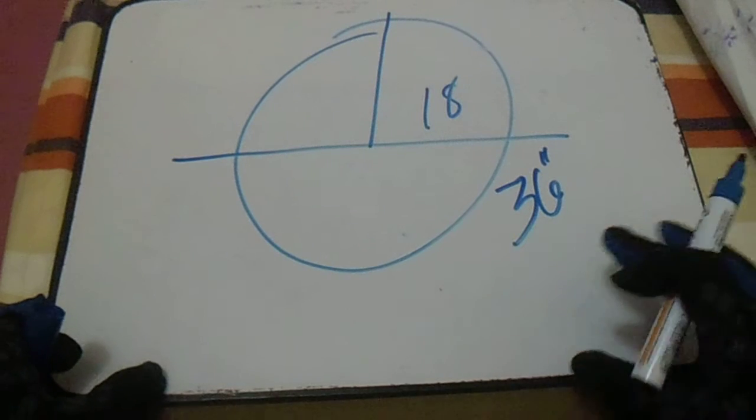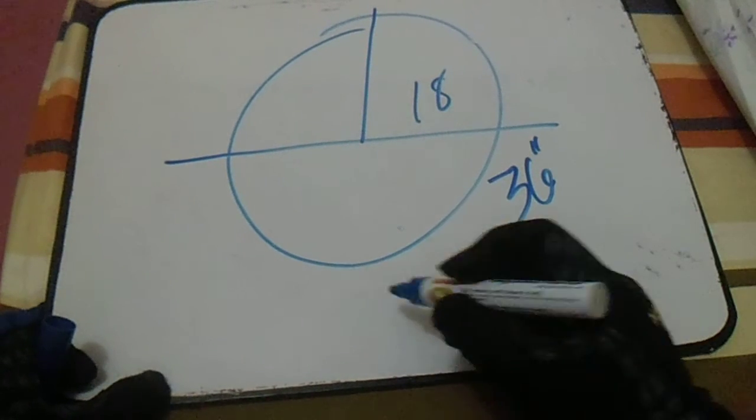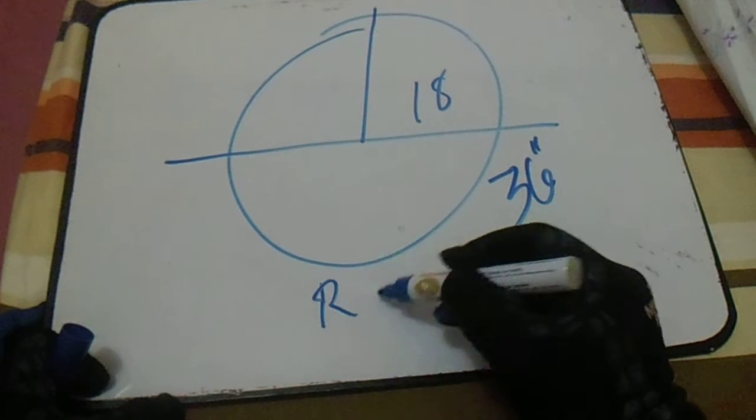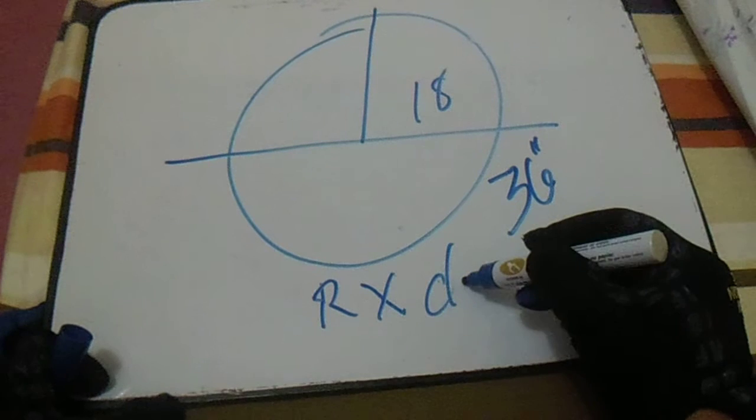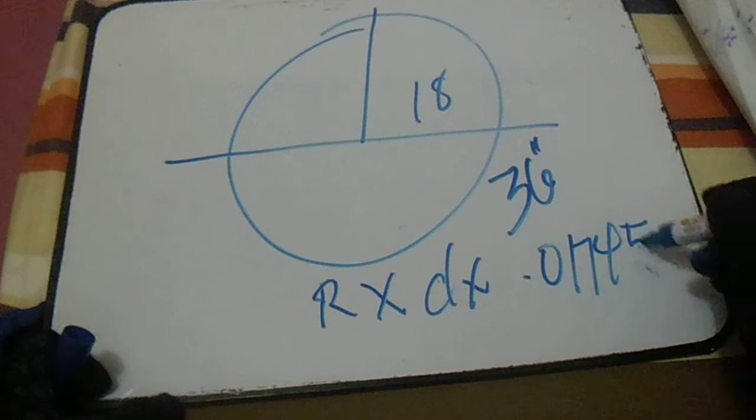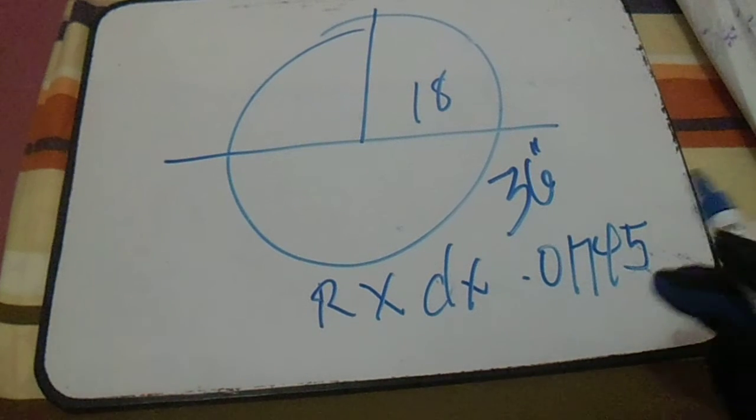To find the arc length, another way to find this arc length is we have a formula for this. It is radius multiplied by degrees multiplied by 0.01745. This is another formula to find the arc.